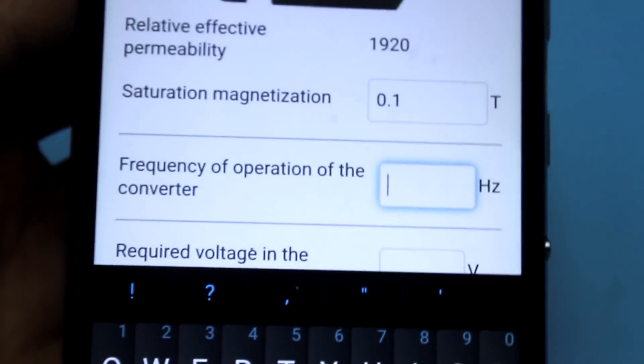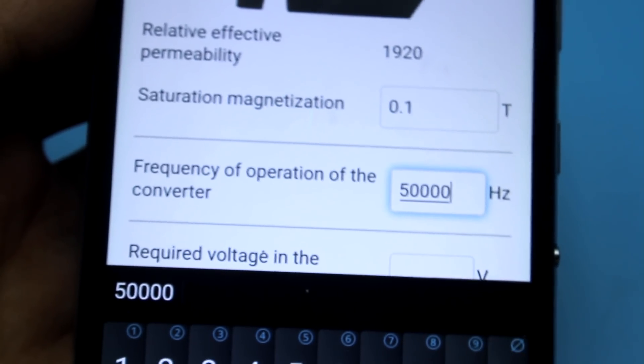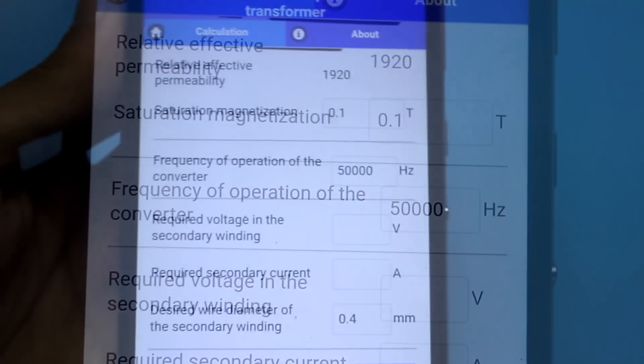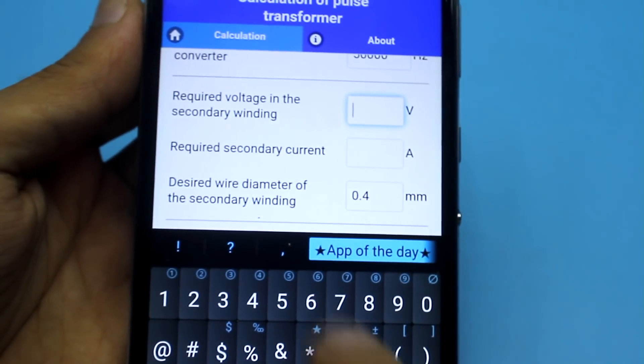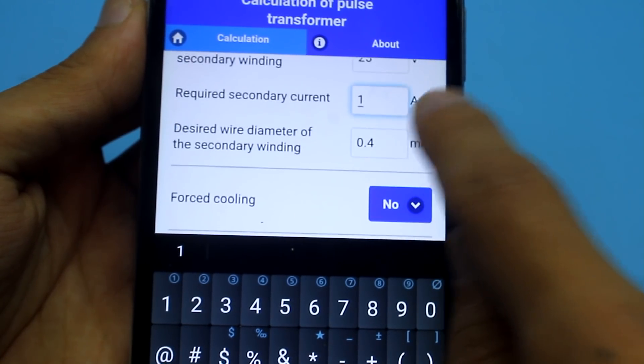Next, insert the frequency of the converter in Hertz. In my case, it is 50 kHz or 50,000 Hz. Next, select the desired output voltage, current and the desired wire diameter of the secondary winding.